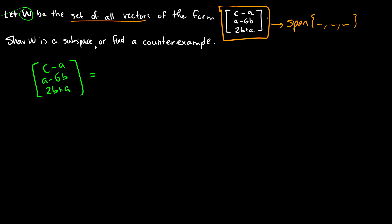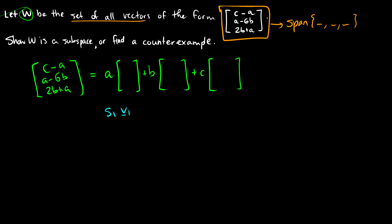We can separate this by taking A times something, plus B times something, plus C times something, giving us coefficient vectors. This looks like a span of the form S1·V1 plus S2·V2 plus S3·V3.